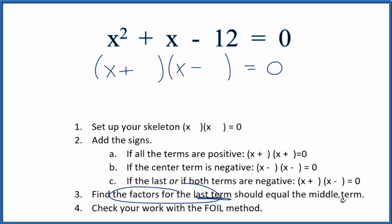Next we find the factors for the last term and these should equal the middle term. So we have 12 as our last term, so we could have 12 times 1, 6 times 2, or 4 times 3. All these are factors of 12.